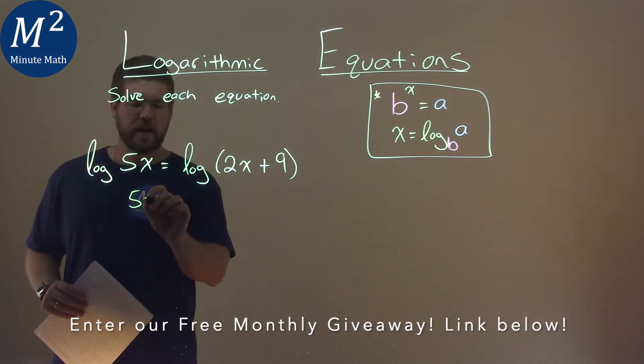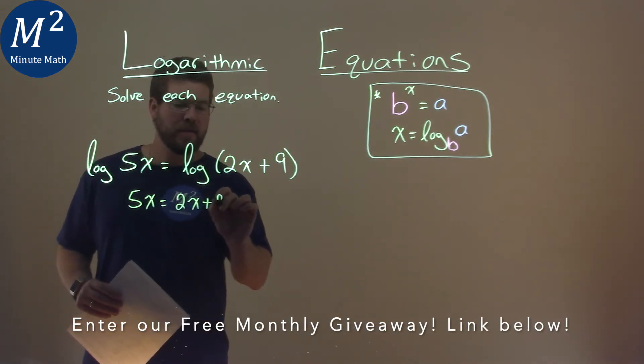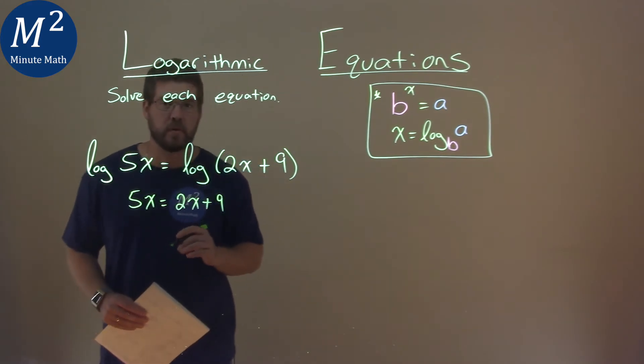So we can set 5x equal to 2x plus 9, and this becomes a much simpler problem.